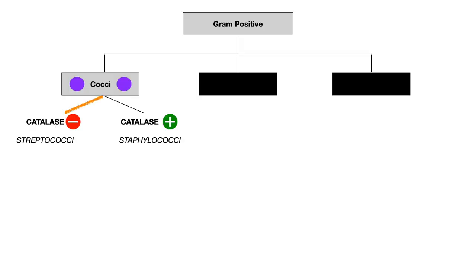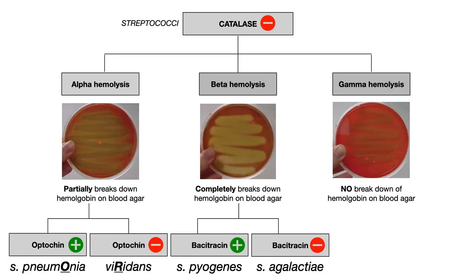You're probably sick and tired of seeing this flow diagram, but the more times I go over it, the more it will stick in your brain. We've been talking about gram-positive cocci, and we can split those cocci into catalase-negative strep or catalase-positive staph. We've been going down the catalase-negative pathway, as you see in that fuzzy orange line. If we further zoom in on catalase-negative strep, which are all gram-positive cocci, we further subdivide them based on their pattern of hemolysis.